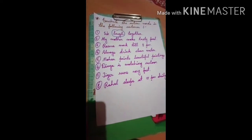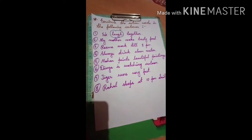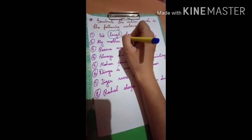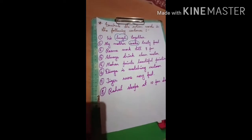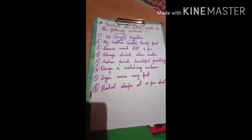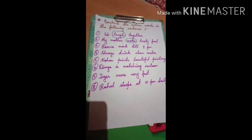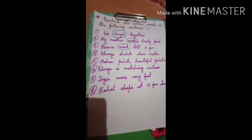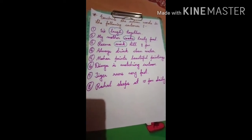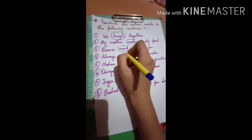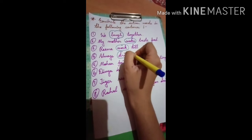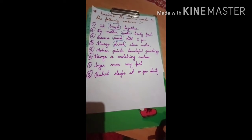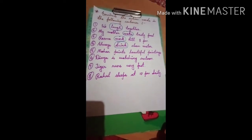Question two — 'My mother cooks tasty food.' The action word is 'cooks.' Question three — 'Rima works till 8 PM.' The action word is 'work.' Question four — 'Always drink clean water.' The action word is 'drink.'